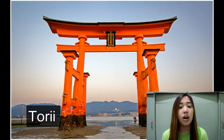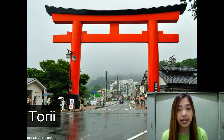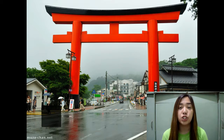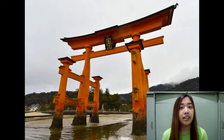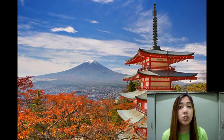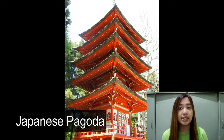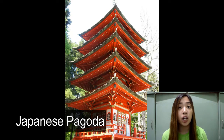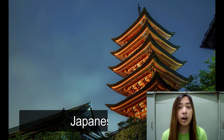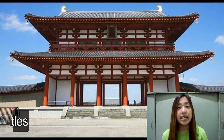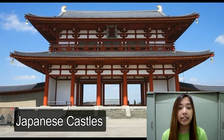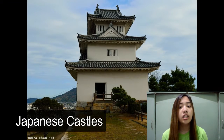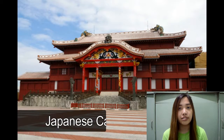Torii is the symbol of a shrine or gate. It represents the division between the everyday world and the divine world. Pagodas are usually square in plan and five stories in height — it is here that holy relics, said to be the remains of the Buddha, are preserved. Japanese castles are elaborate in design and strongly fortified to demonstrate the power of the joshu, or lord of the castle.